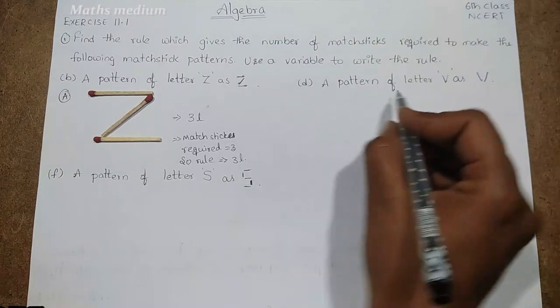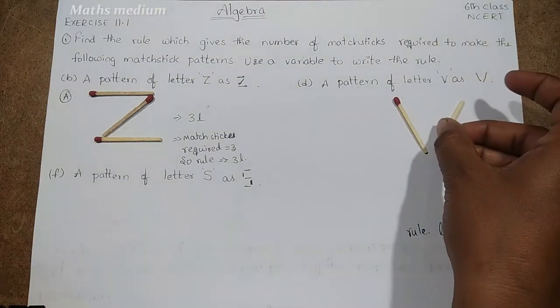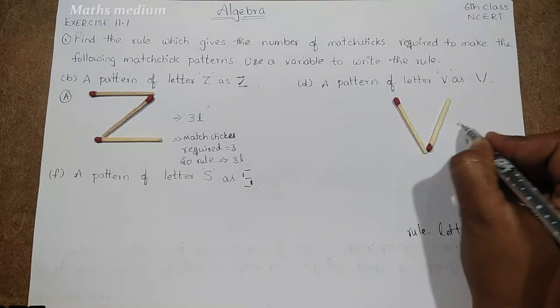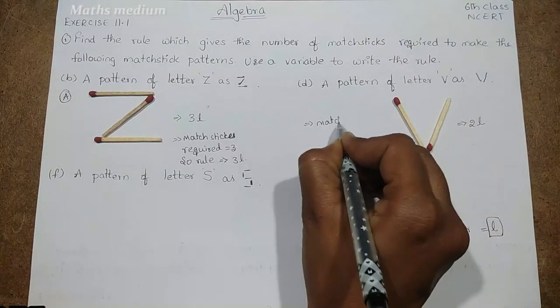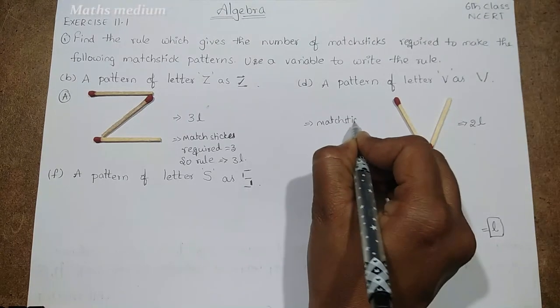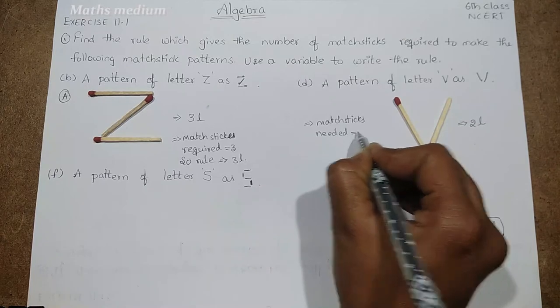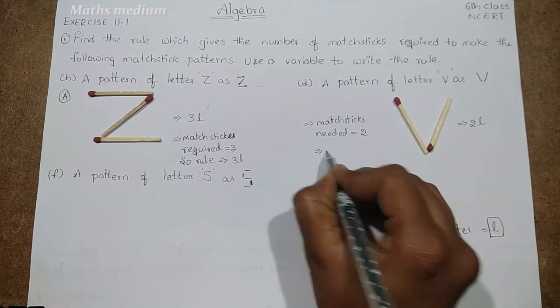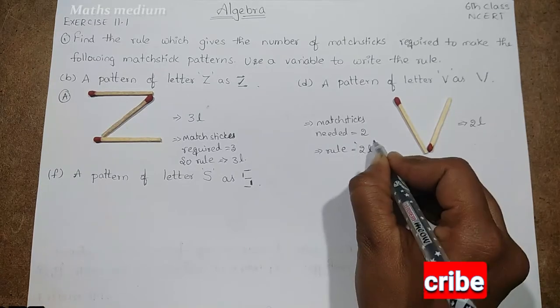Similarly, here also a pattern of letter V as V. So take 2 matchsticks like this and here we need 2 matchsticks like 2L. Now matchsticks needed is equal to 2 and the rule is also equal to 2L because we are taking common for all L.